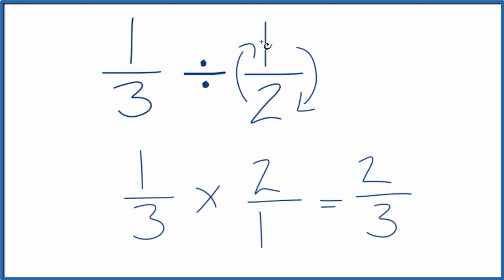So one-third divided by one-half, that gives us two-thirds. And it's smaller than one, like we expected.